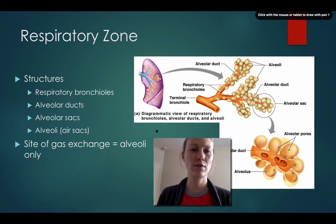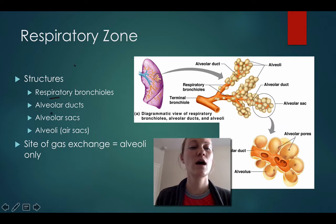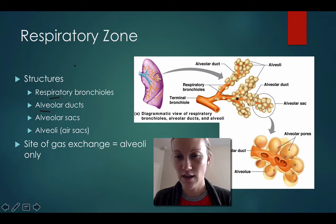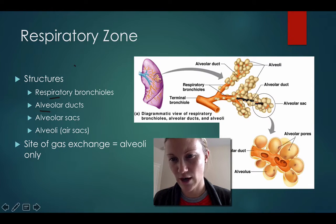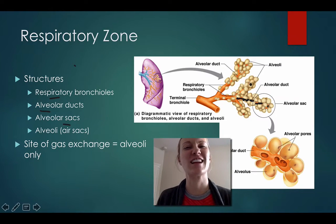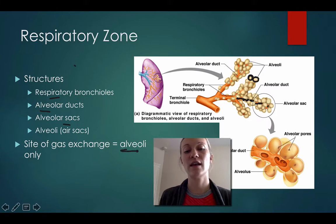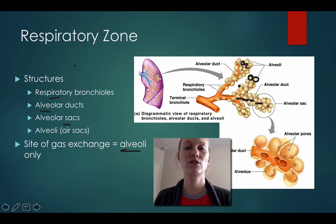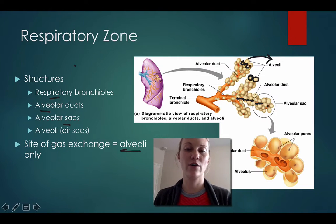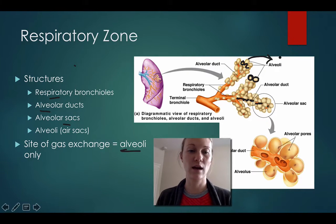In the respiratory zone there are a few different structures: the respiratory bronchioles, the alveolar ducts, and the alveolar sacs, which kind of look like eggs. The alveoli are the actual air sacs inside there, and the site of gas exchange is in the alveoli only. A whole bunch of oxygen will diffuse from high to low concentration out into other areas, which will enable the blood to become oxygenated.